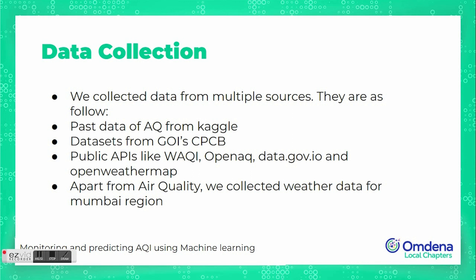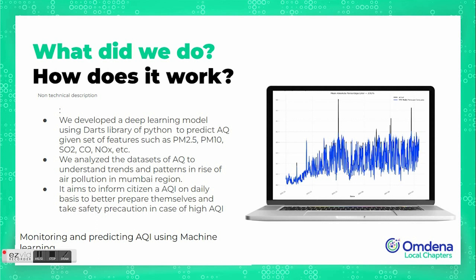Moving forward to our key achievements: we built a deep learning model using Python's Darts library, which is a popular time series library with many state-of-the-art models. Using features like PM2.5, PM10, SO2, CO2, and NOx, we built a TFT (Temporal Fusion Transformer) model — a complex deep learning model — which achieved a MAPE of 3.93%, a highly accurate result. We also analyzed AQI data trends and patterns across the datasets.